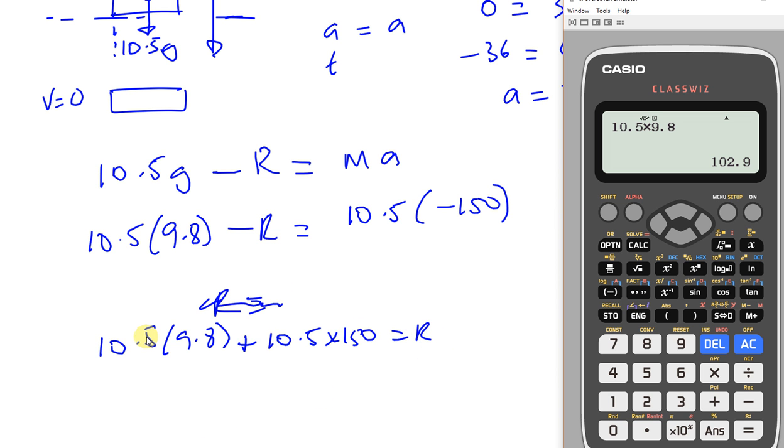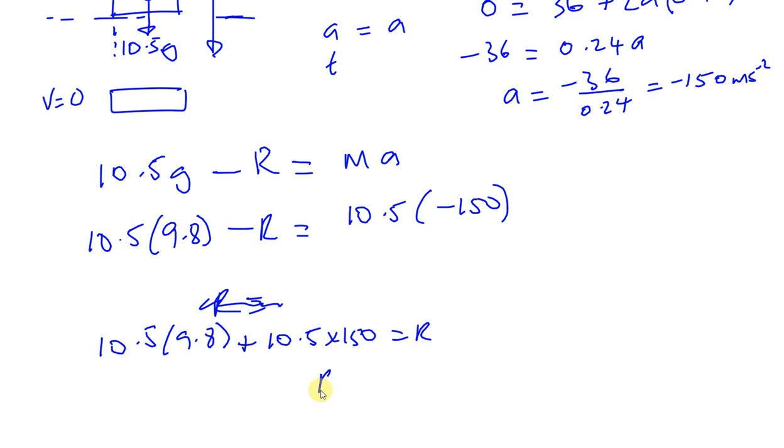This which is 122.9 plus 10.5 times 150. That's positive now because you moved it to the side. So you end up with 1677.9. So R is 1677.9, which we can round to 3 significant figures as 1680 Newtons. Okay, so there we have the answer to this question. Thank you for watching.